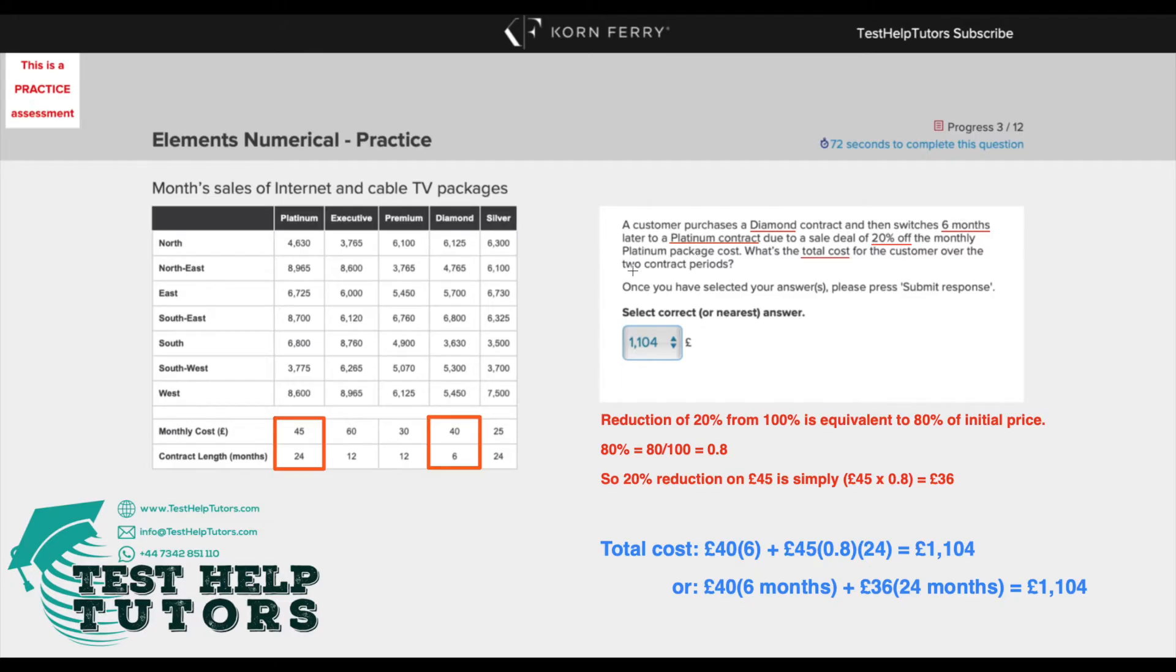To solve this problem, we'd have to look at our table here and specifically these two sections, where it states for a diamond package, the monthly cost is £40 a month and the contract length is six months. And for a platinum package, the monthly cost is £45 and the contract length is 24 months.